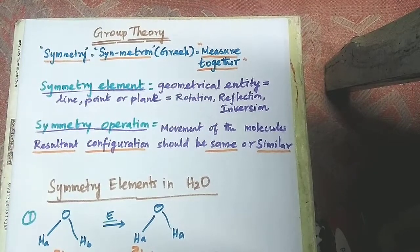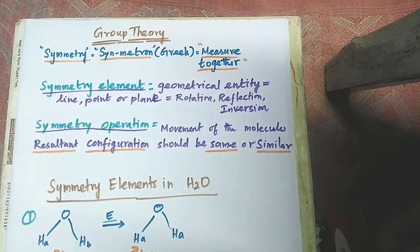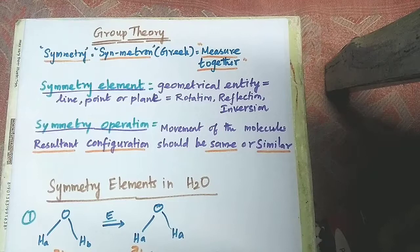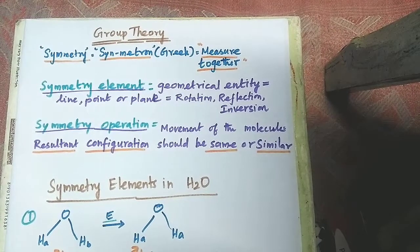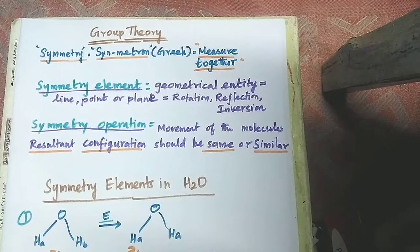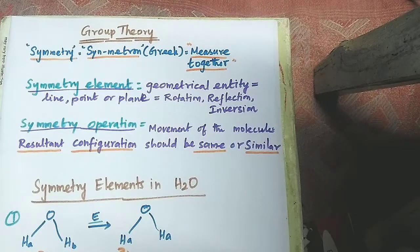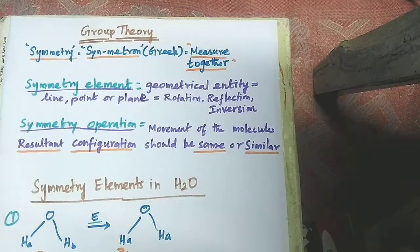What is a symmetry operation? With the symmetry elements we can do symmetry operations. A symmetry operation is the movement of a molecule so that we get some resultant configuration after the movement. The movement may be rotation, reflection, or inversion. By doing a rotation, reflection, or inversion on the molecule, we get a final configuration from the initial configuration.